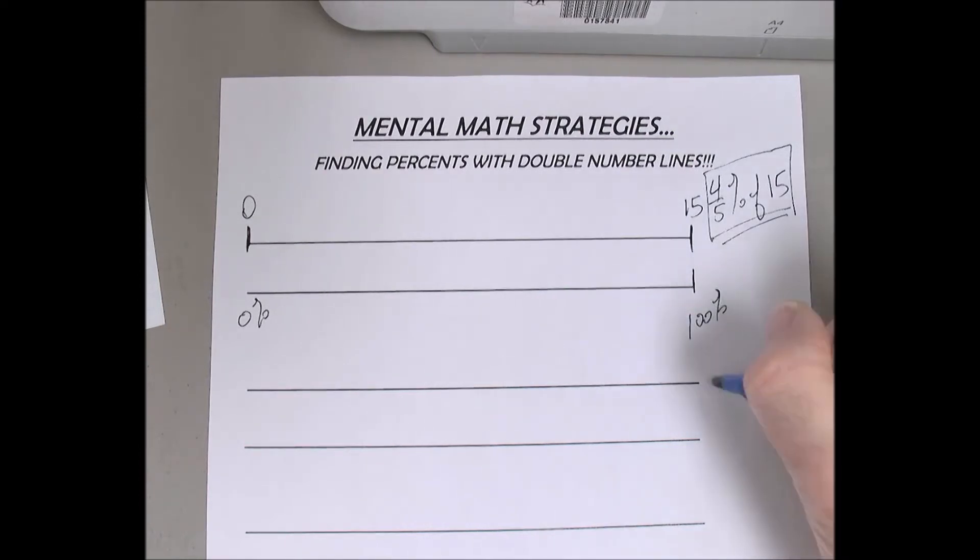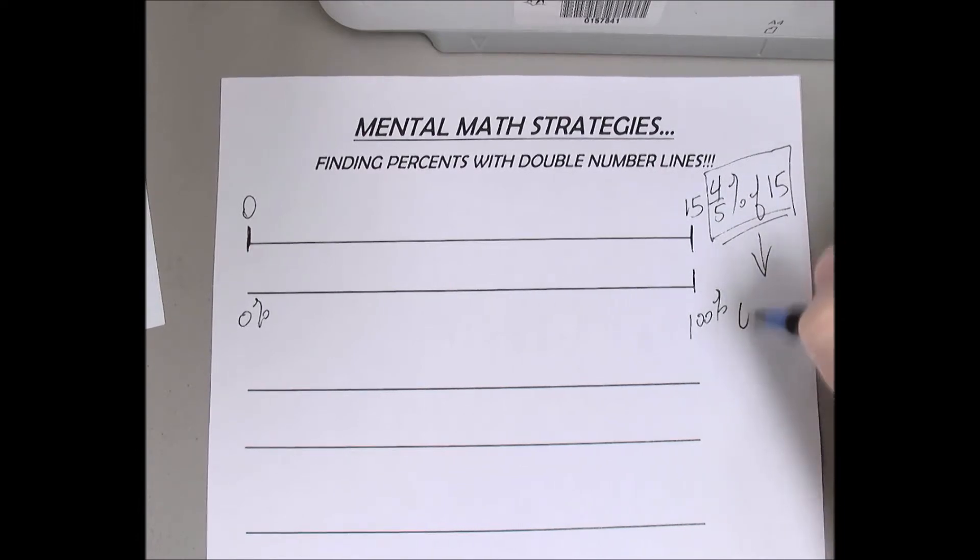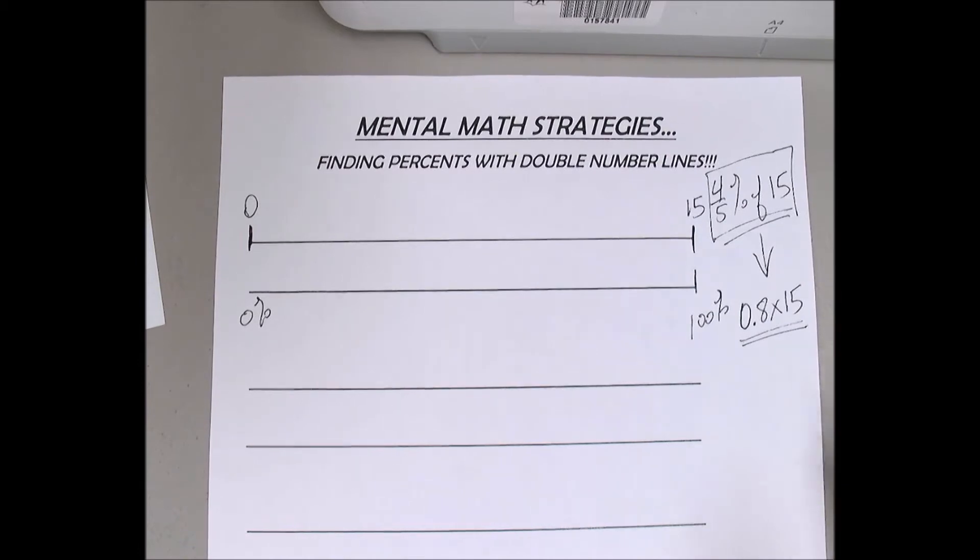Kayla, do you have any ideas? Convert it to a decimal. Could you do that with mental math or did you need to do a little work? You could? Okay, that's a good strategy. So what's four-fifths as a decimal? Zero point eight times 15 or of 15. Okay, so what does the zero point eight make you think of? What percent does it make you think of? 80. It makes me think of 80, too.